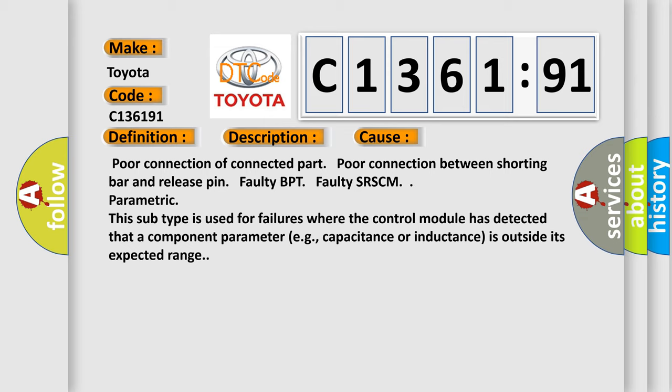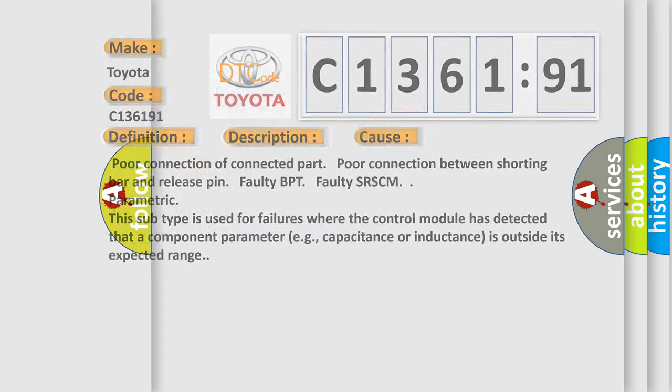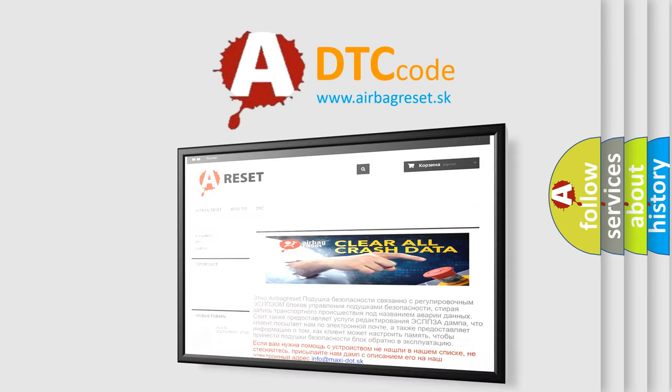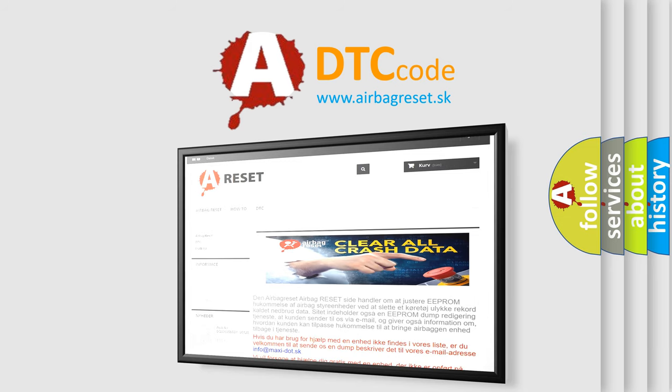This diagnostic error occurs most often in these cases: poor connection of connected part, poor connection between shorting bar and release pin, faulty BPT, faulty SRSCM. Parametric: this subtype is used for failures where the control module has detected that a component parameter, e.g. capacitance or inductance, is outside its expected range. The Airbag Reset website aims to provide information in 52 languages.